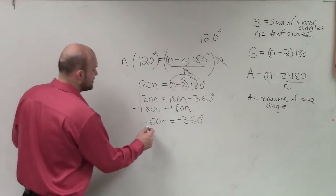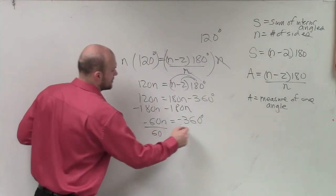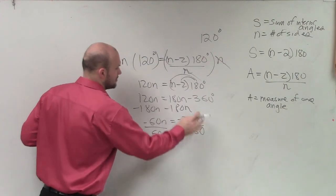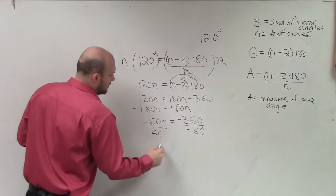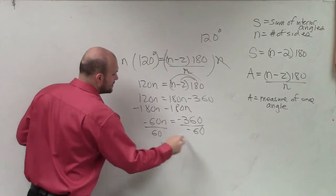And I have negative 60n equals negative 360 degrees. Then to solve for n, I just divide by negative 60. Therefore, n will equal 6.